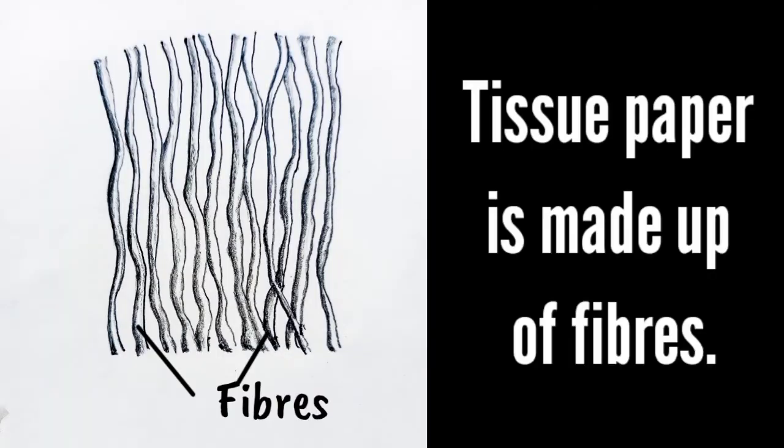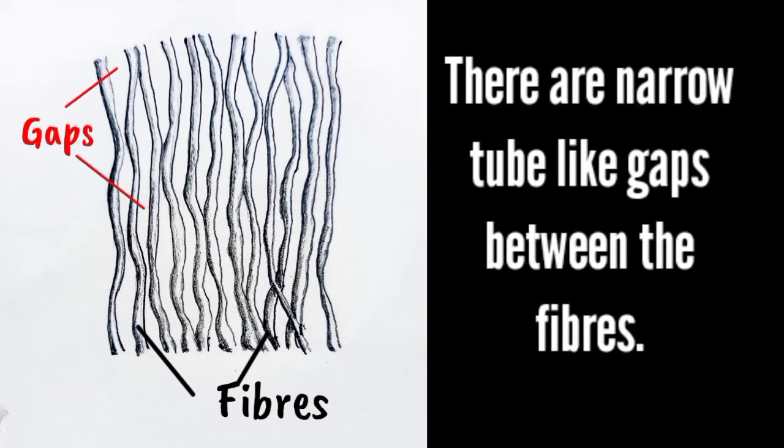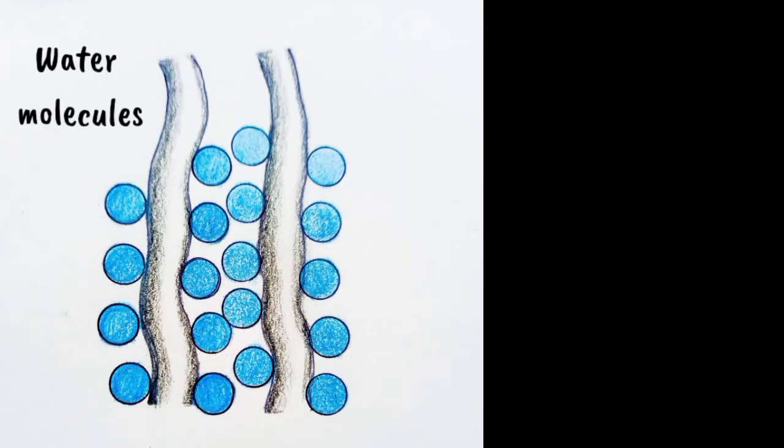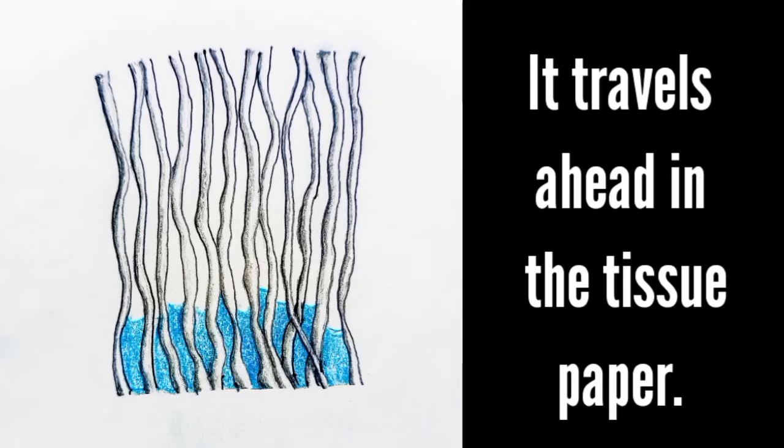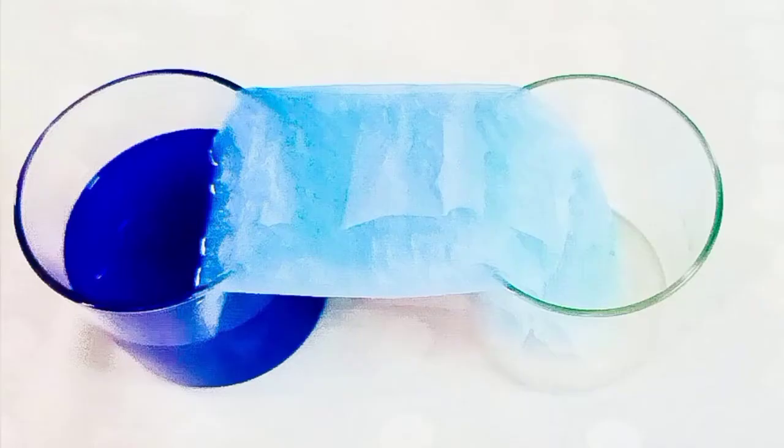Tissue paper is made up of fibers. There are narrow tube-like gaps between the fibers. Water particles or molecules stick to the surface of fibers and rise up in the gaps. It travels ahead in the tissue paper and reaches the other glass.